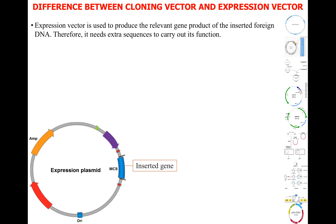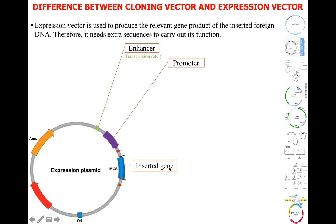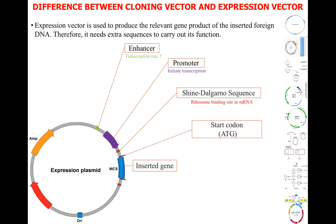An expression vector is used to produce the relevant gene product of the inserted gene. Therefore, it needs extra sequences to carry out its function. One such sequence is an enhancer — a short region of DNA bound by transcription factor proteins to increase the transcription rate of the inserted gene. A promoter is a regulatory region of DNA located upstream of the gene, initiating transcription of the inserted gene. The Shine-Dalgarno sequence is a ribosomal binding site in messenger RNA of bacteria, located approximately 8 bases upstream of the start codon. The start codon — ATG for DNA and AUG for mRNA — is the first codon of a messenger RNA translated by a ribosome.